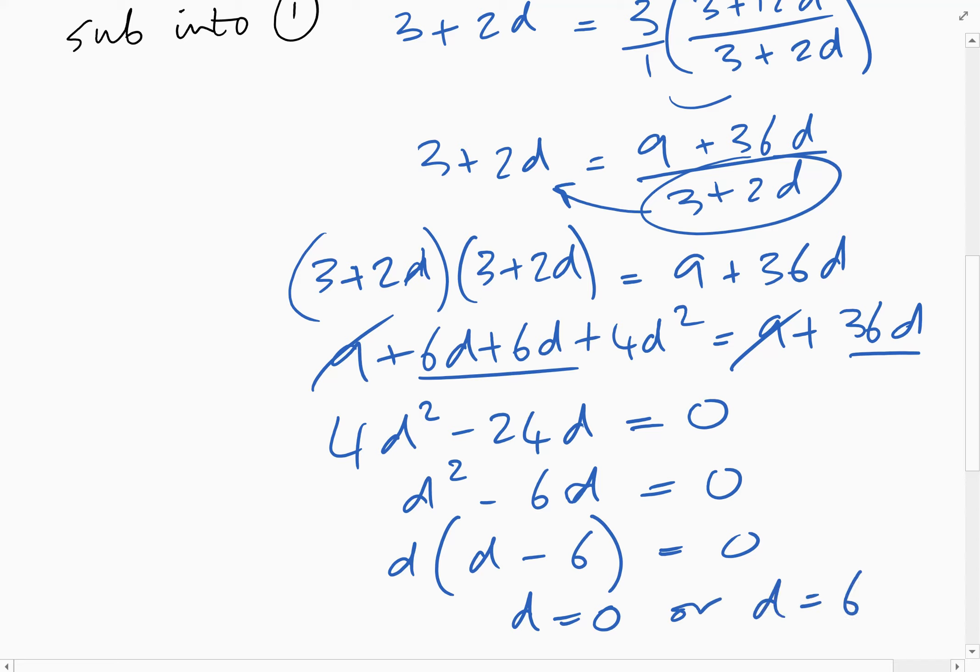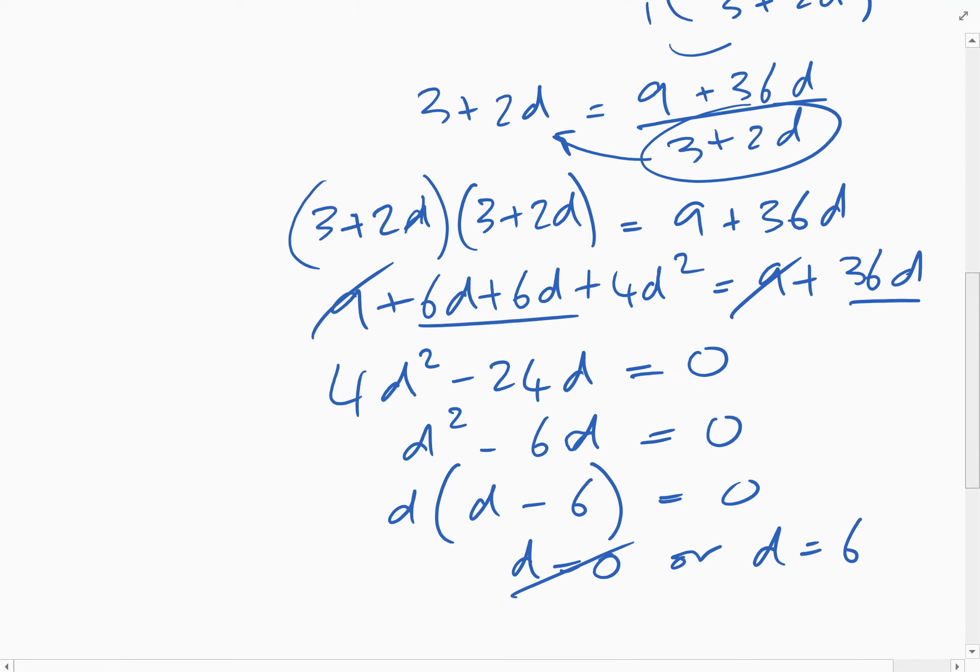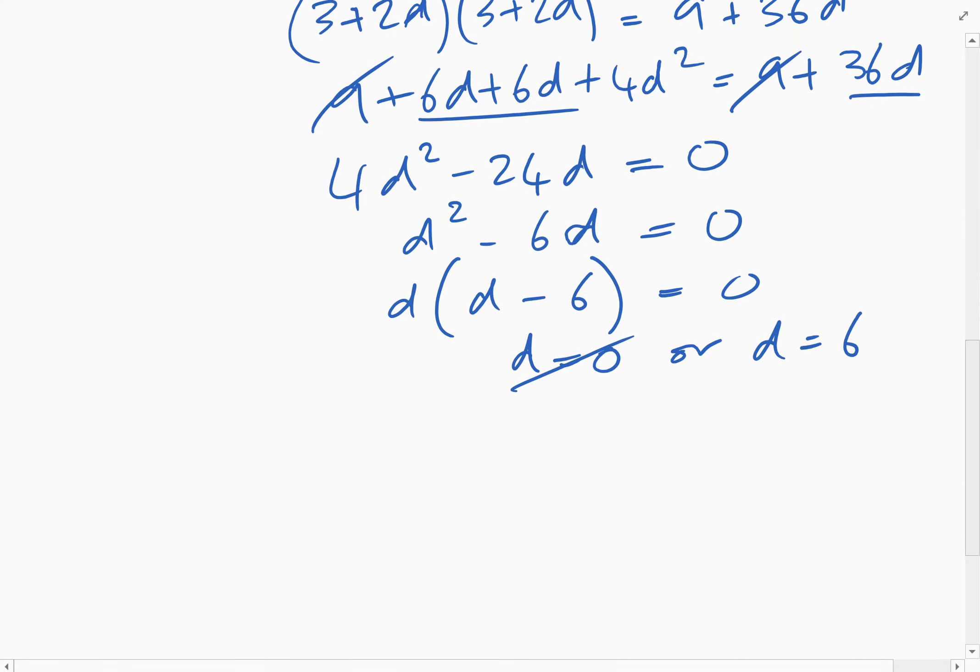Actually, d can't equal zero because then all the terms will be the same for the arithmetic sequence. So d must equal six. So that's one part of the question answered.